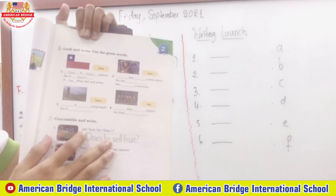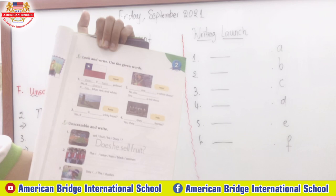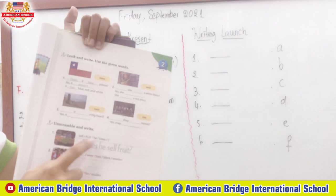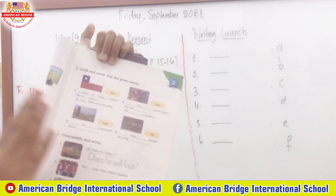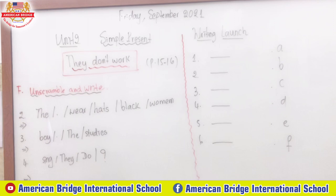You will see there are four pictures. For number one, they have already finished it for you — the words are: sell, fruit, he, does, and a question mark. You need to unscramble the words and put them in order to make a complete sentence. It is in the question form, so we need to put 'does' first. He is the subject — third person — so we put 'does he,' then the verb, then the object: Does he sell fruits?